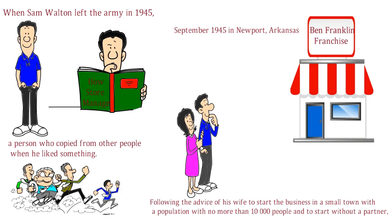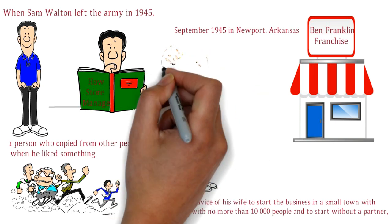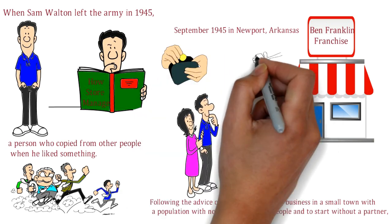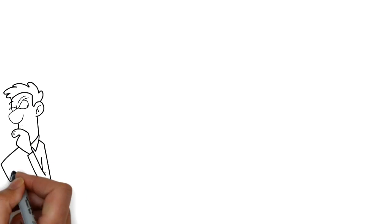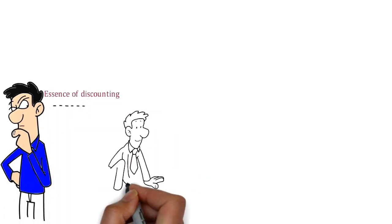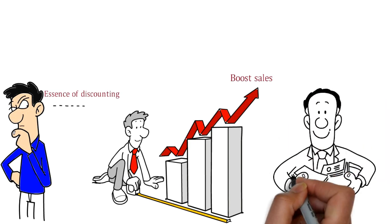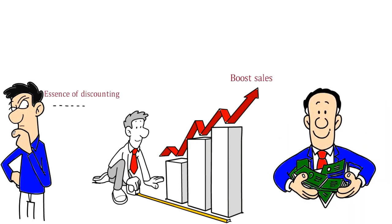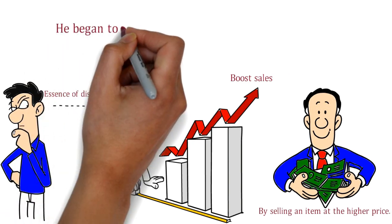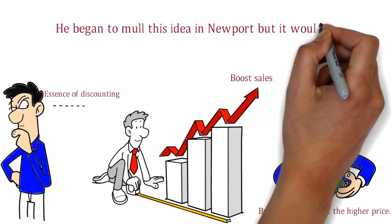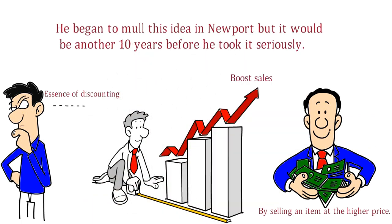Walton soon realized the essence of discounting: by cutting your price, you can boost your sales to a point where you earn far more at a cheaper retail price than you would have by selling an item at the higher price. He began to mull this idea in Newport, but it would be another 10 years before he took it seriously.